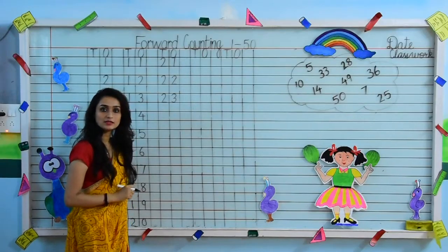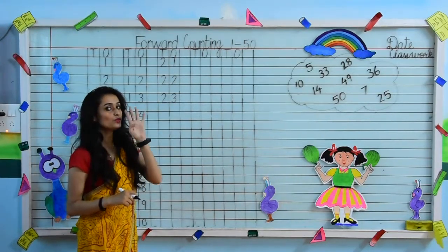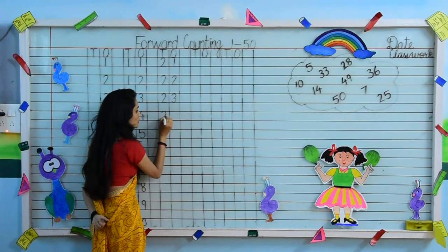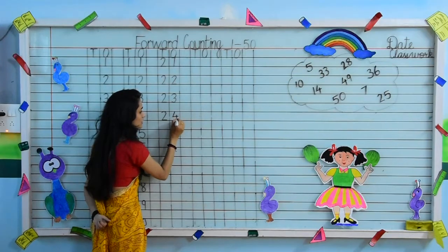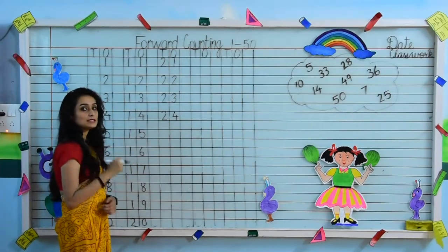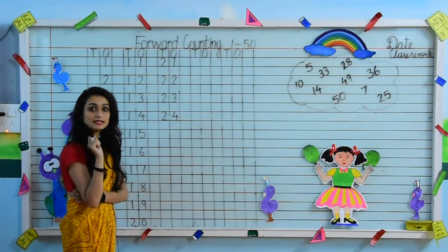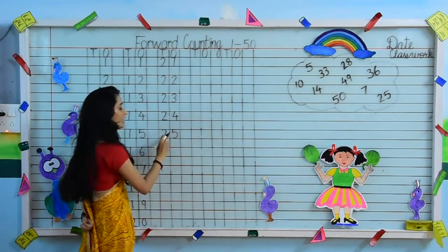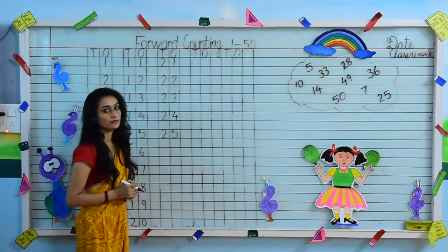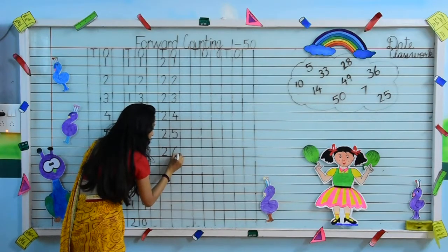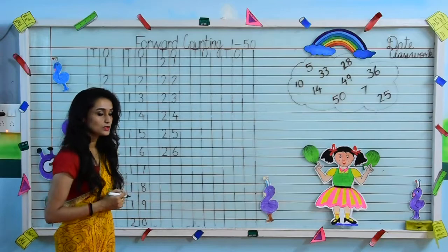What comes after 23? After 23, we write 2, 4 — 24. Very good, kids. Tell me what comes after 24? Our next number is 2, 5 — 25. After 25, our next number is 2, 6 — 26.